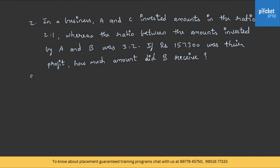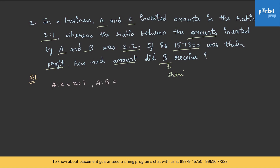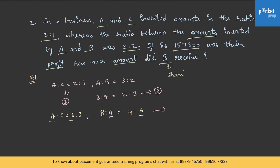Another question: In a business, A and C invested in ratio 2:1, whereas the ratio between amounts invested by A and B was 3:2. If Rs. 1,57,300 was their profit, how much did B receive? A:C = 2:1 and A:B = 3:2, so B:A = 2:3. Multiplying to equate: A:C = 6:3 and B:A = 4:6, giving A:B:C = 6:4:3.